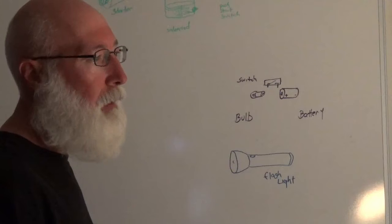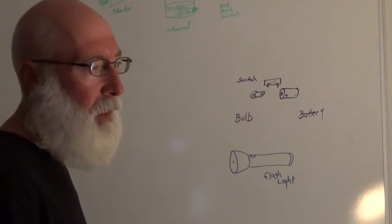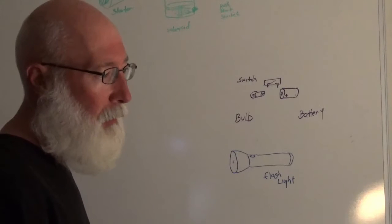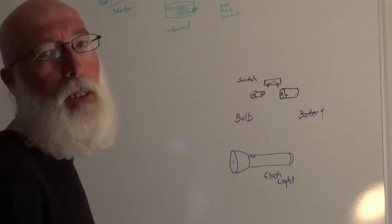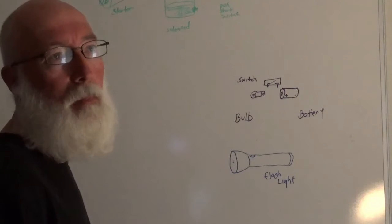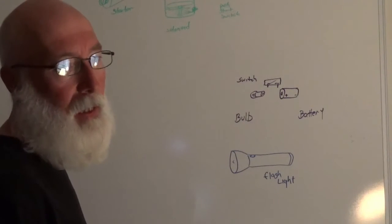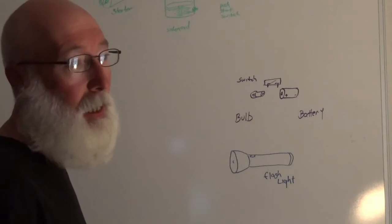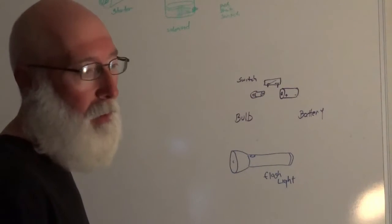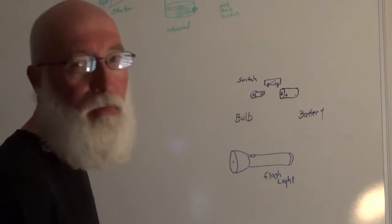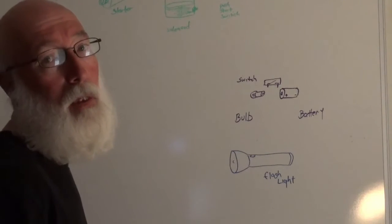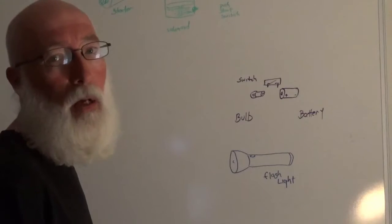We did a video on a Honda VTX, and it was a no-start, a no-crank no-start. When we got into the switch, the thumb switch on the handlebars, we found out that the contacts had a lot of dirt and debris in there. We cleaned them up, and the bike ended up cranking no problem. We're going to explain that circuit in a simplified sense in a way that applies to most motorcycles and most cars out there.